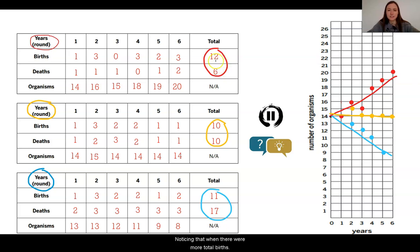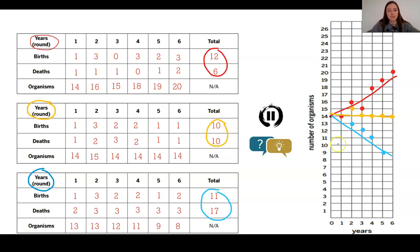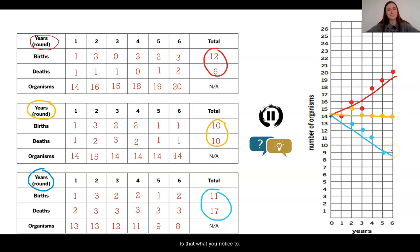Although each individual round had different numbers of births and deaths, when I look at the totals, the ratios of births to deaths seem to follow a pattern. I'm noticing that when there were more total births than deaths, my best line of fit goes upwards for an increasing population. When I have the same number of births and deaths, my population seems to be staying the same. And finally, when I have more deaths than births, my population seems to be decreasing.